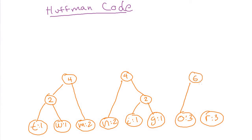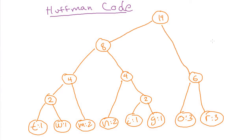Then we see that the next smallest things are O and R, which have frequency three, so we combine them with a parent of frequency six. Now we have two fours to add, so we join them with a parent of eight. Finally, we add the eight and the six together to get fourteen. This is our finalized Huffman tree. By building the tree this way, leaf nodes with the biggest frequency are closest to the root, while the ones with the smallest frequency are furthest away — the threes are only two steps from the root, while the frequency-one nodes are four steps away.